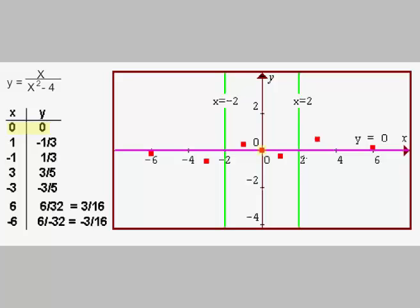We want to find points on each side of each vertical asymptote, so we'd probably plug in 1 for x. That gives us 1 over 1 squared minus 4, or 1 over negative 3, which is negative 1 third. So here's the point 1, negative 1 third.